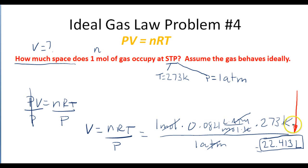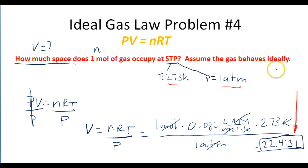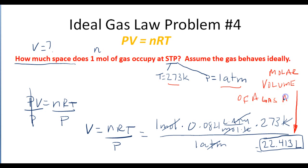The molar volume means that one mole of any ideal gas at STP — 273 K and 1 atm — will always occupy 22.4 liters. Whether it's oxygen, nitrogen, or water vapor, one mole at STP occupies 22.413 liters. This is the ideal gas law, and I hope you found this helpful.